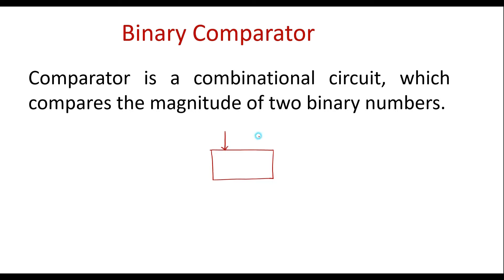Let a and b be the two numbers, where a is having n bits and b is having n bits. We call this an n-bit comparator. So there may be a one-bit comparator, two-bit comparator, three-bit comparator, and likewise an n-bit comparator. This means a is having n binary bits and b is having n binary bits.